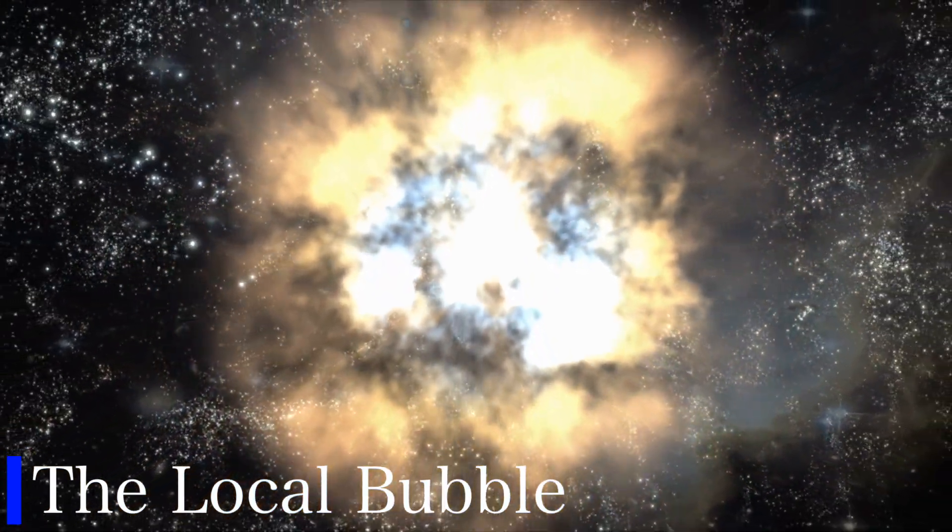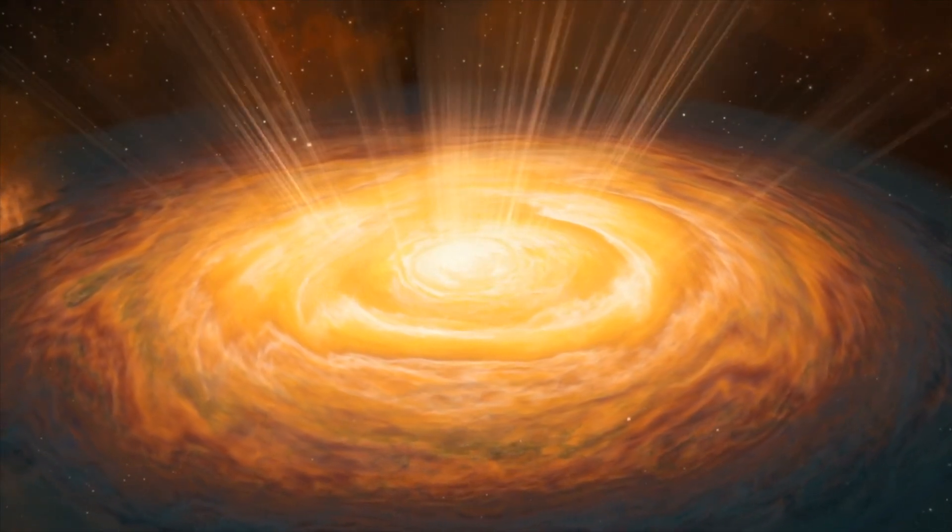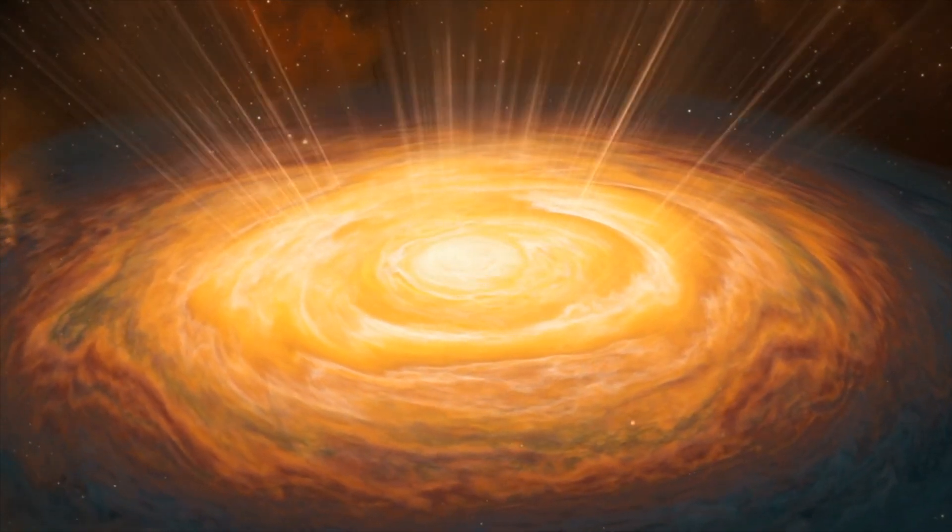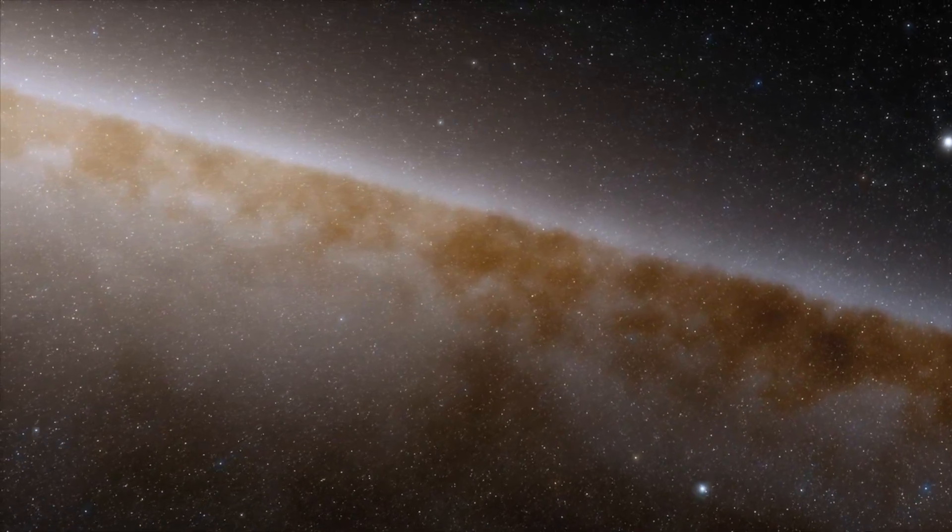Before you freak out, our earth is in a relatively safe patch of space, called the local bubble. On average, a supernova will occur once in every 50 years in the Milky way. And fortunately, there are no big supermassive stars within 50 light-years of the earth.